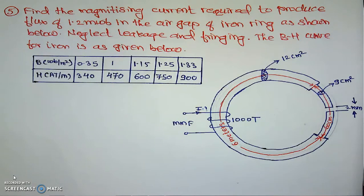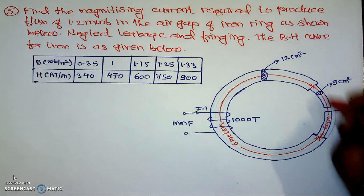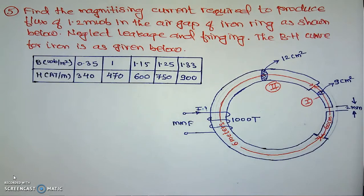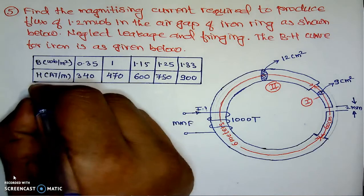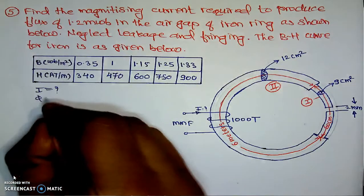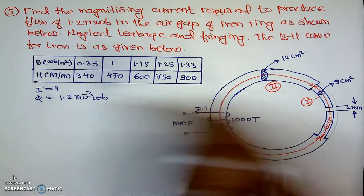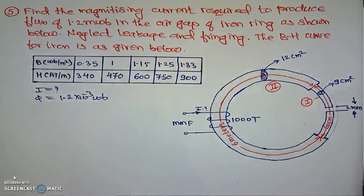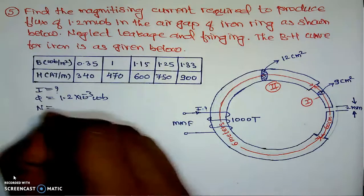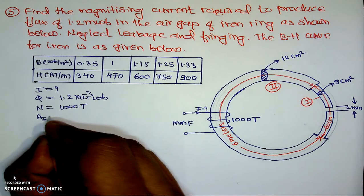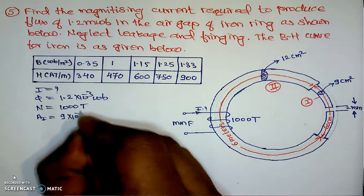First I will sort out the given data. I will give names to the magnetic paths: the smaller dimension magnetic path I will call path number one, this is path number two, and the third path is the air gap. As per the given data, the flux in the air gap is 1.2 × 10⁻³ Webers. The number of turns is 1000, and the area of part 1 is 9 cm², that is 9 × 10⁻⁴ m².